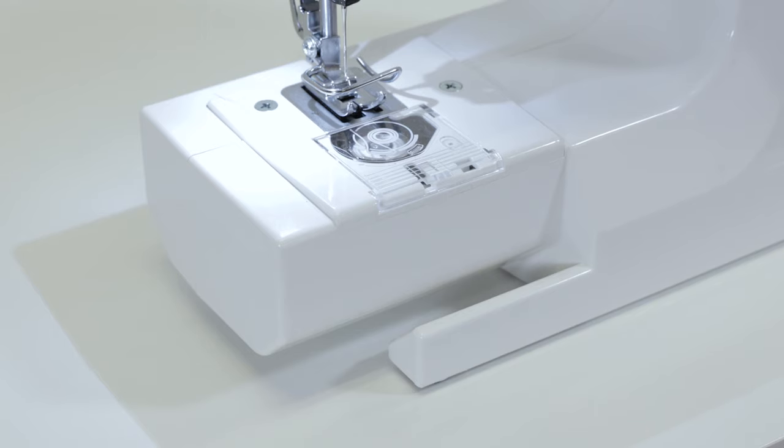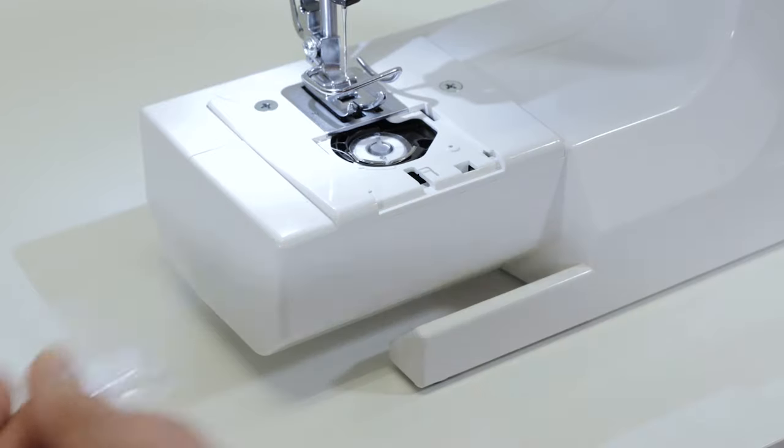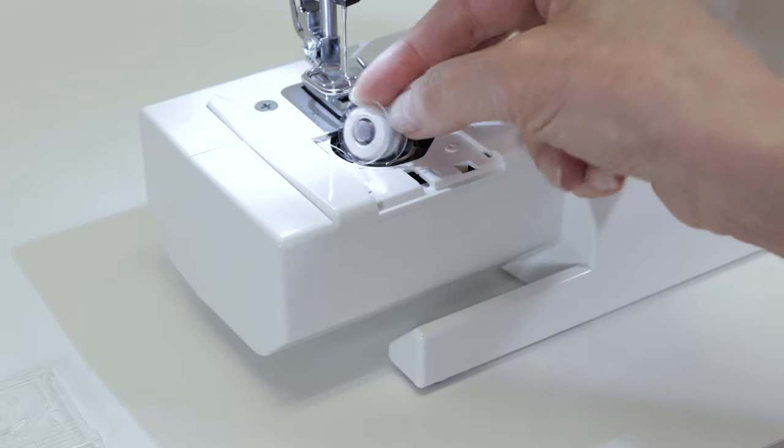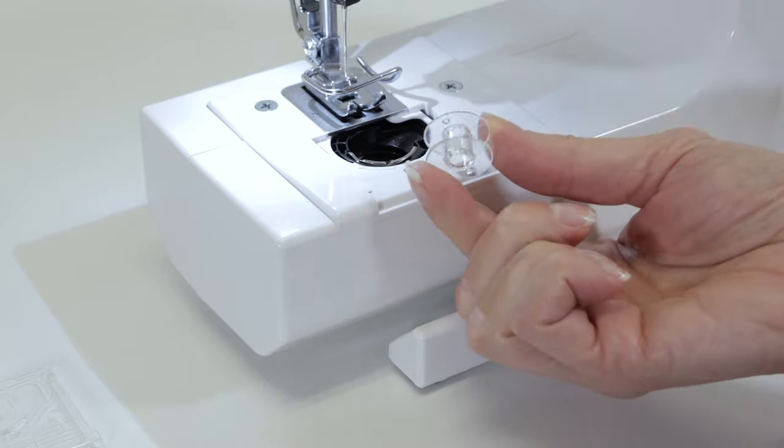To thread the machine, the first thing we have to do is wind a bobbin. Down here is your bobbin cover plate, and we would remove that. Your machine may have come with a bobbin already wound, but if you want a different color of thread in your machine, we're going to have to wind one, so we'll take this out and use one of the empty bobbins that came with your machine.